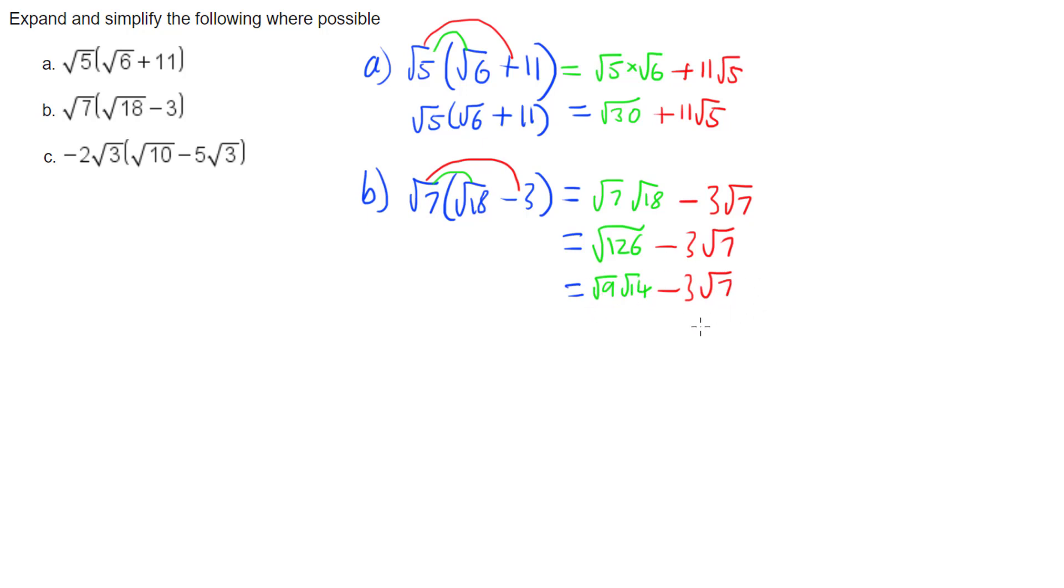So I have root 9 times root 14, minus 3 root 7. I can then square root the 9, giving 3 root 14 minus 3 root 7. Now I am as simple as I possibly can be. So root 7 times root 18 minus 3 is 3 root 14 minus 3 root 7.